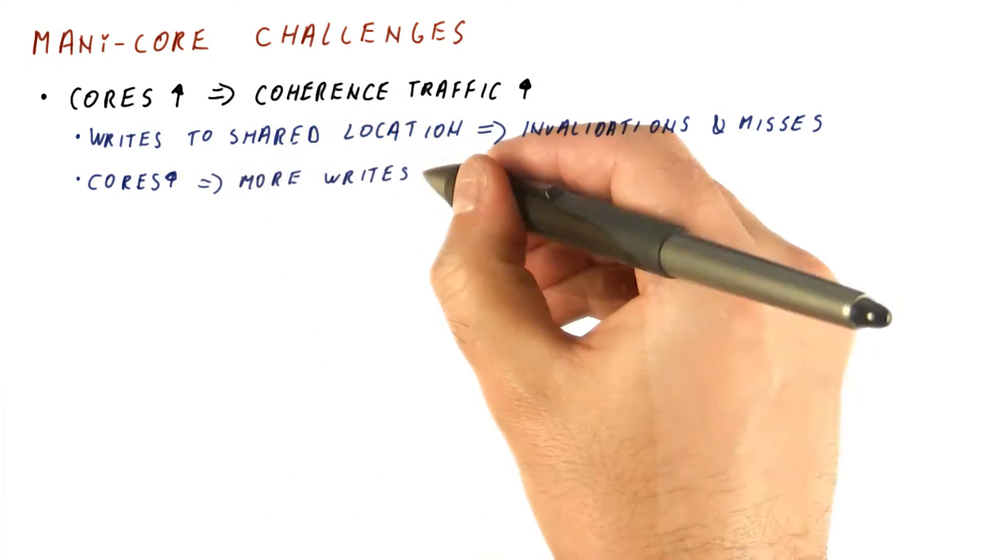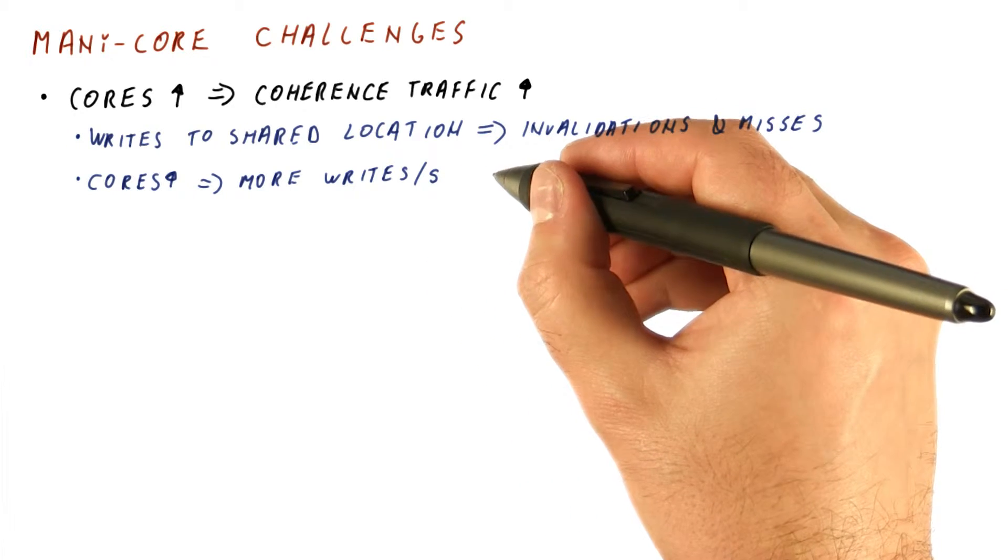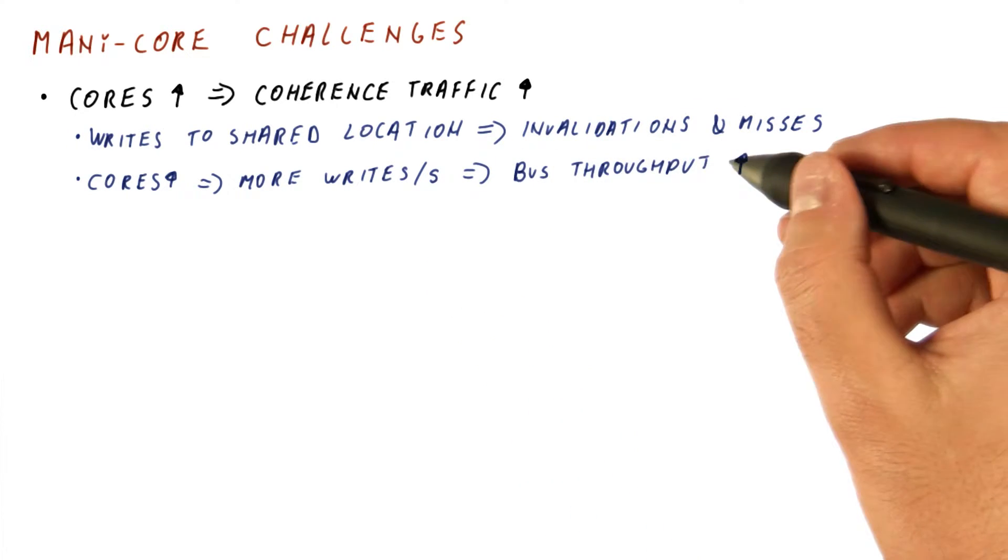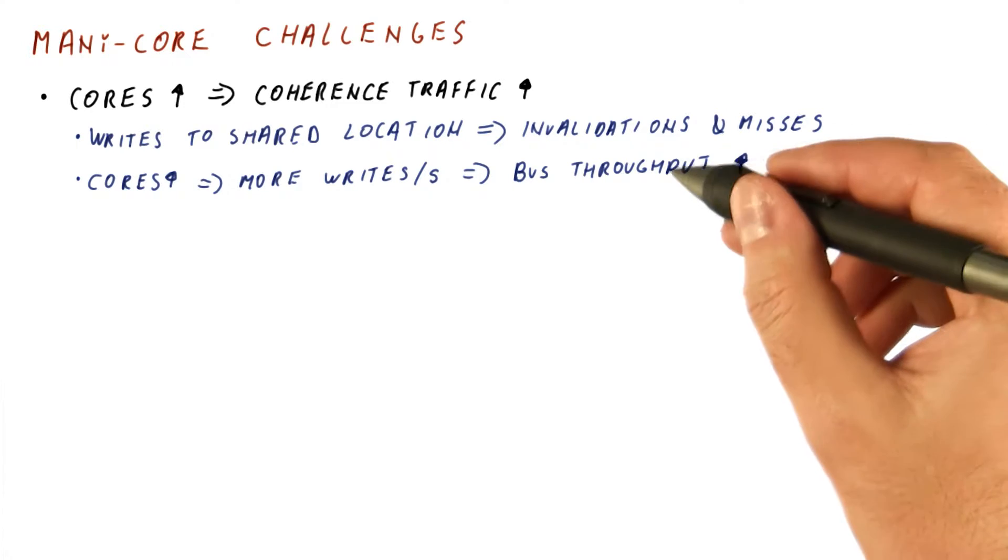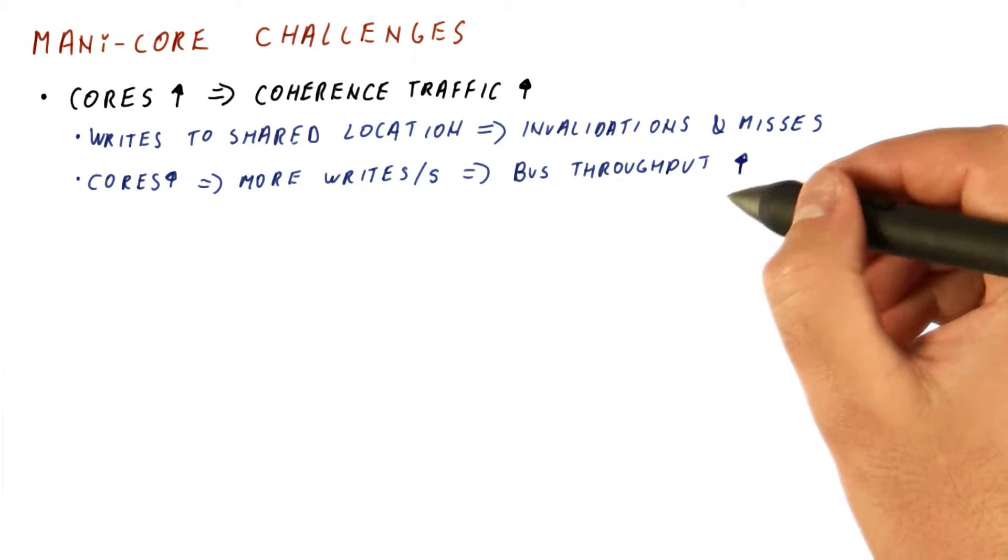As we increase the number of cores, we get more writes per second. And as a result, the bus throughput that we need goes up until it eventually exceeds what we can do on a bus.